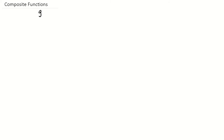In this video, we'll talk about composite functions. So first, let's suppose we have two functions. One function is called g, and one function is called f. And g is a function that maps, for example, a to b. So in this case, g of a would equal b, because g is a function that maps a to b.